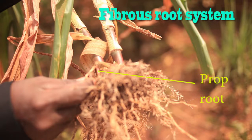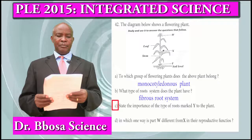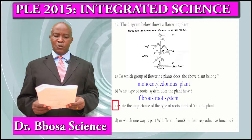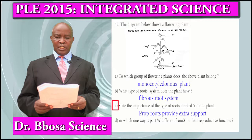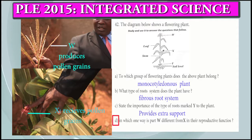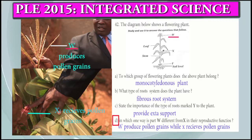These roots are called prop roots for extra support. Part C: State the importance of the type of root marked Y to the plant. It provides extra support. Part D: In which way is part W different from X in their reproductive function? W produces pollen grain — the male gamete. X receives pollen grain.